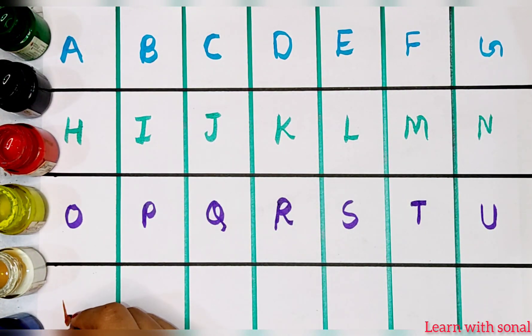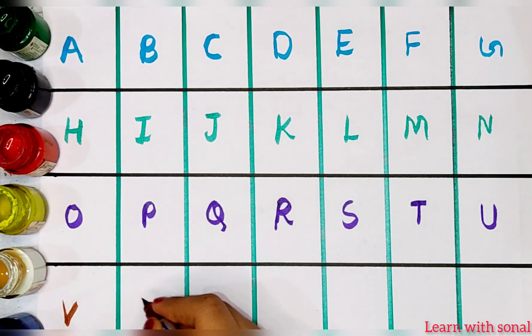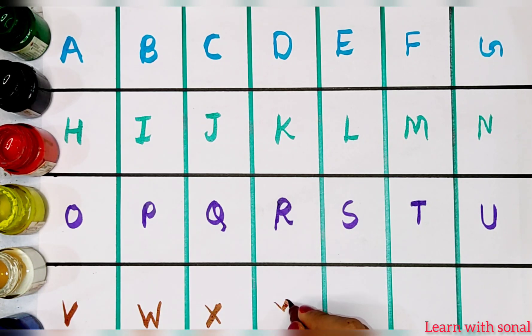V. V for van. W. W for watch. X. X for xylophone. Y. Y for yellow. Z. Z for jewel.